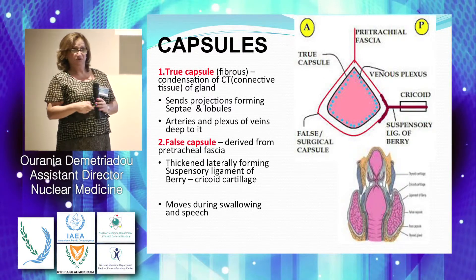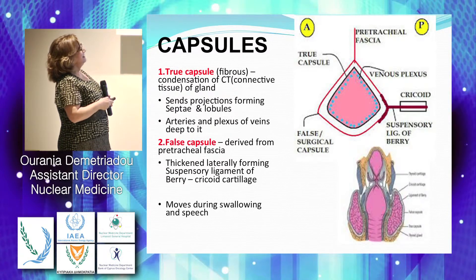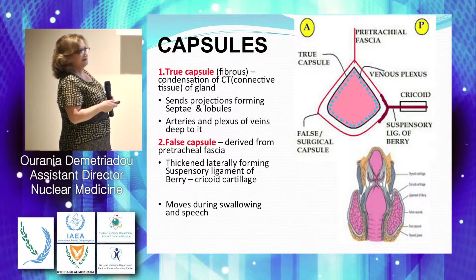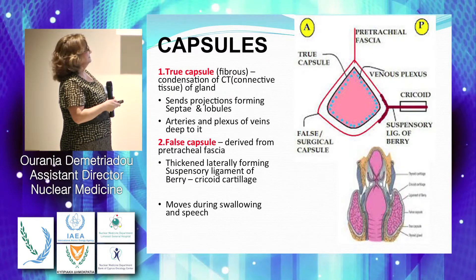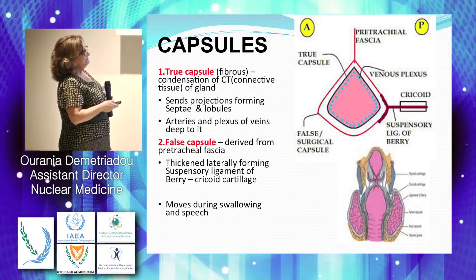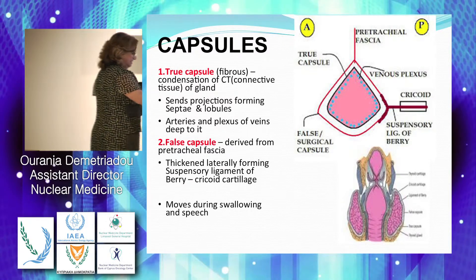The thyroid has two capsules. We have the true capsule of the thyroid, which is the condensation of the connective tissue of the gland, and within it we have the vessels, arteries, nerves, and it makes septa and lobules in the gland. The false capsule on the outside is derived from the pretracheal fascia and is thickened and holds the gland to the cricoid cartilage. That's why it moves during swallowing and speaking.